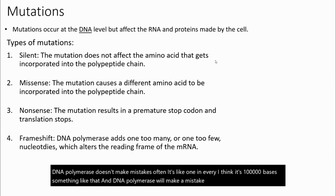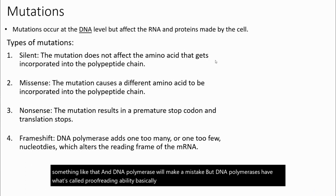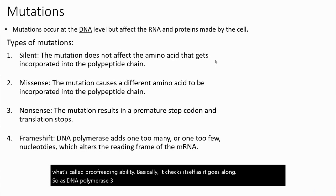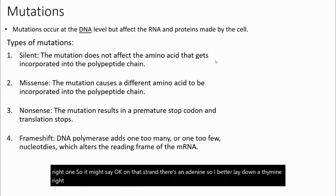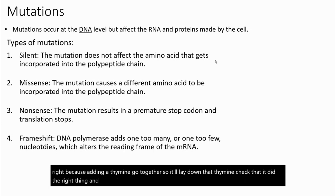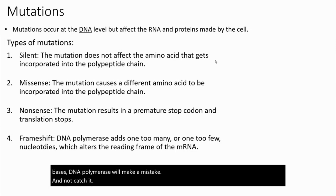DNA polymerases have what's called a proofreading ability — basically, it checks itself as it goes along. As DNA polymerase 3 is laying down nucleotides, it checks to make sure it laid down the right one. For example, if there's an adenine on the template strand, it lays down a thymine, checks that it did the right thing, and moves on. But about every one in one billion bases, DNA polymerase will make a mistake and not catch it. That's how mutations can happen.